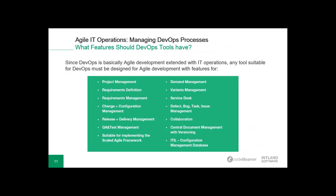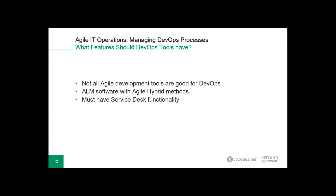It's always a question what features a DevOps tool should have. Since DevOps is basically agile development extended with IT operations, any tool suitable for DevOps must be designed for agile development with features such as project management, requirements management, change management, and so on. However, not all agile development tools are good for DevOps — quite the opposite. Only a few agile development tools are sufficiently integrated or flexible enough to provide what DevOps requires. Typically, an ALM software solution can handle agile and hybrid methods of development for DevOps, because of the adaptability. But they must also have service-based functionality.